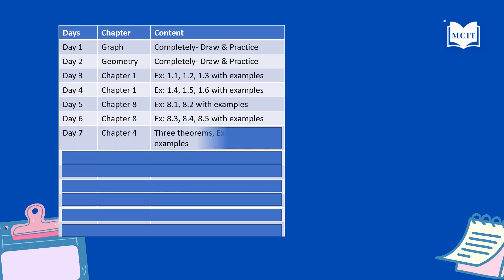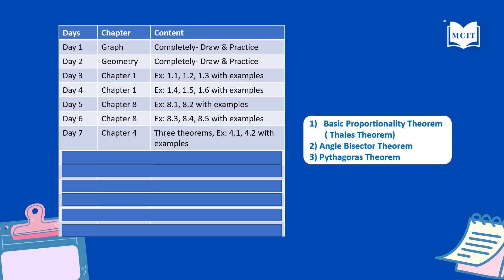Day seven: Chapter four. Exercise 4.1, 4.2, with examples. Students, chapter four is important. At least three theorems are key: Basic Proportionality Theorem, Angle Bisector Theorem, and Pythagoras Theorem.